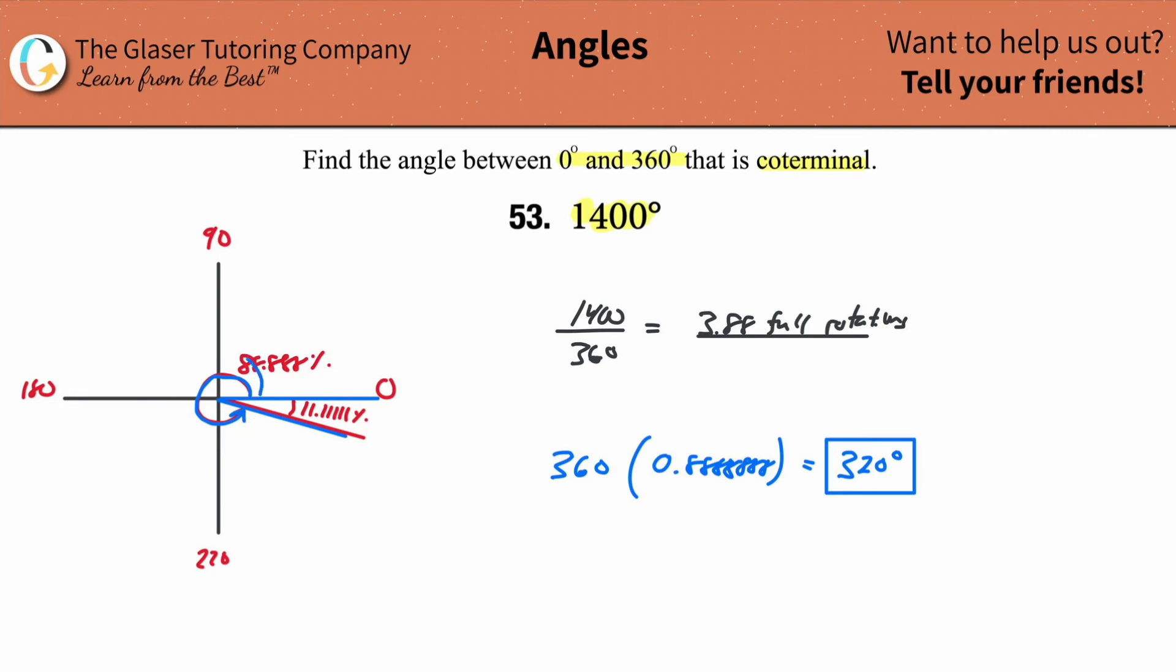But that represents this coterminal angle here, starting at the positive x, rotating around less than 360 because we needed it to be between 0 and 360. And it represented 320 degrees.